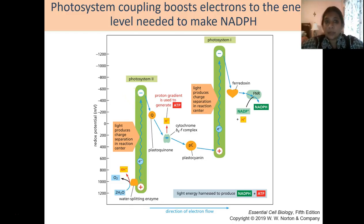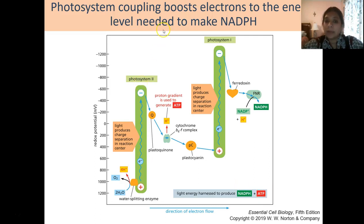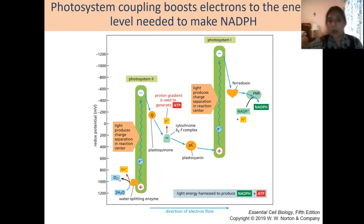In the last lecture we talked about how chloroplasts are used to harness energy from the sun, converting light into usable energy in the form of NADPH and ATP. We discussed two different photosystems utilized to collect this energy. In photosystem 2, light is taken in by chlorophyll molecules to excite electrons, and a water-splitting enzyme breaks water apart into oxygen and protons.